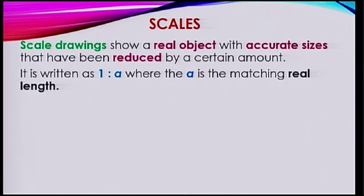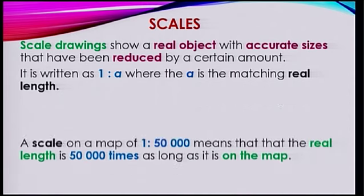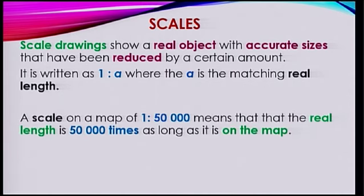How is it written? Scales — it is written as 1 is to A, where A is the matching real length. So a scale on a map of 1 is to 50,000 means that the real length is 50,000 times as long as it is on the map.